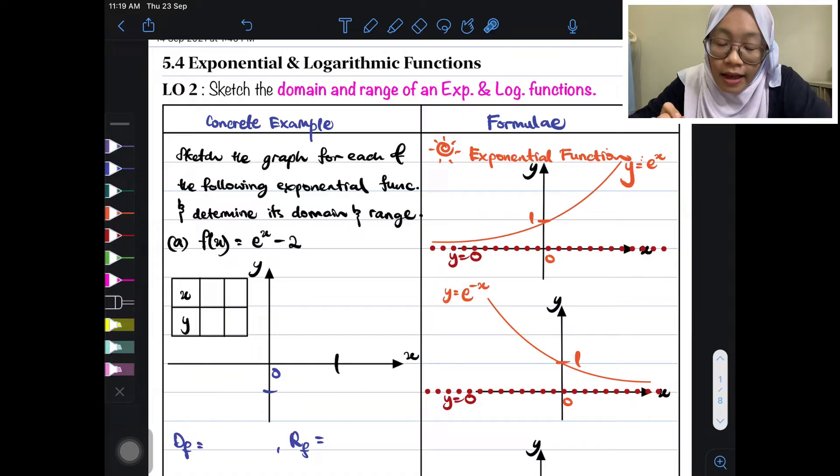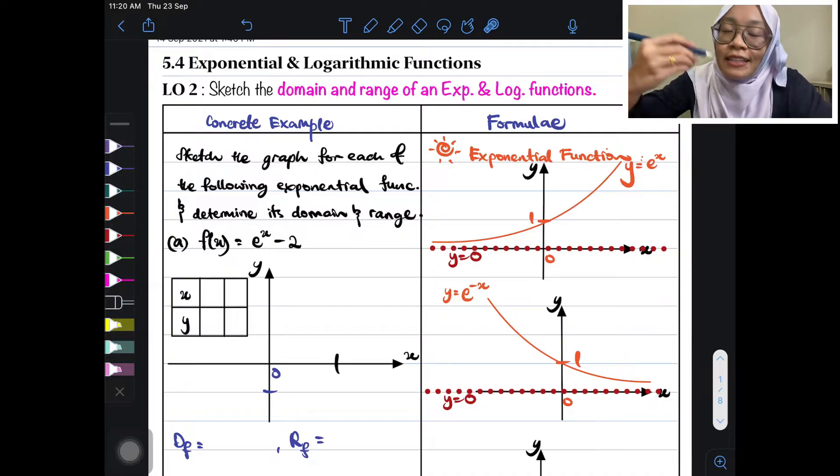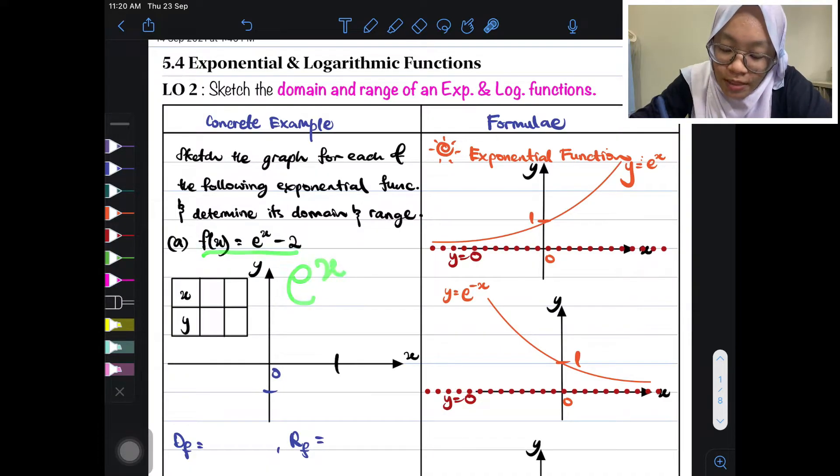So now let's draw exponential functions with a concrete example. Sketch the graph for each of the following exponential functions and determine its domain and range afterwards. Let's look at the first function here which is f(x) equals to e^x minus 2. This is how we say it, exponent x minus 2.